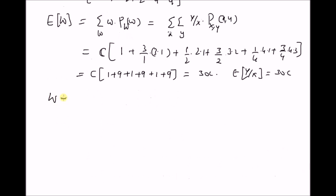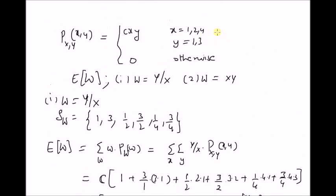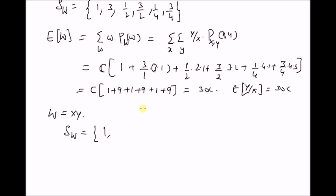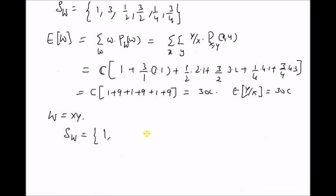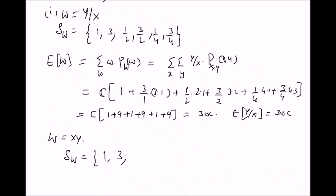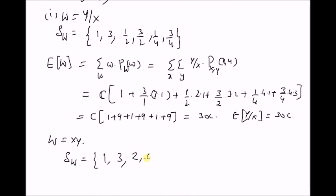Next, for W = x·y, the range consists of the following values: for x=1, y=1, we have 1; for x=1, y=3, we have 3; similarly for other values we have 2, 6, 4, and 12. So these are the values in the range of W when the function is x·y.